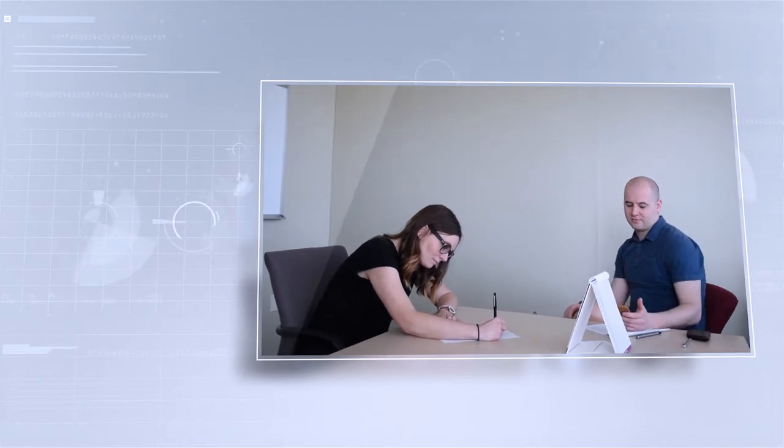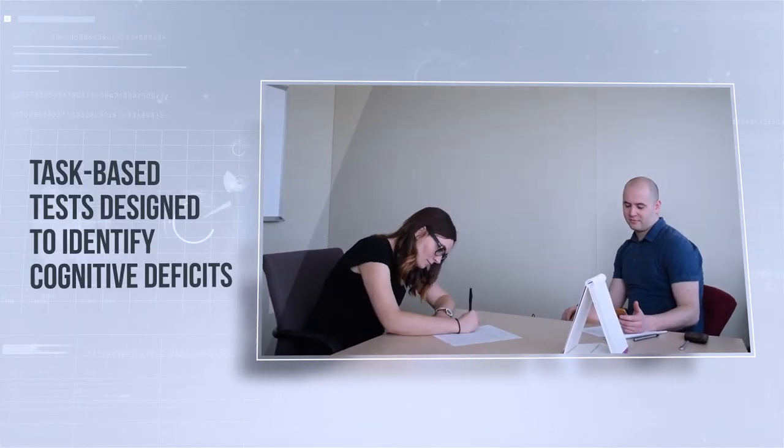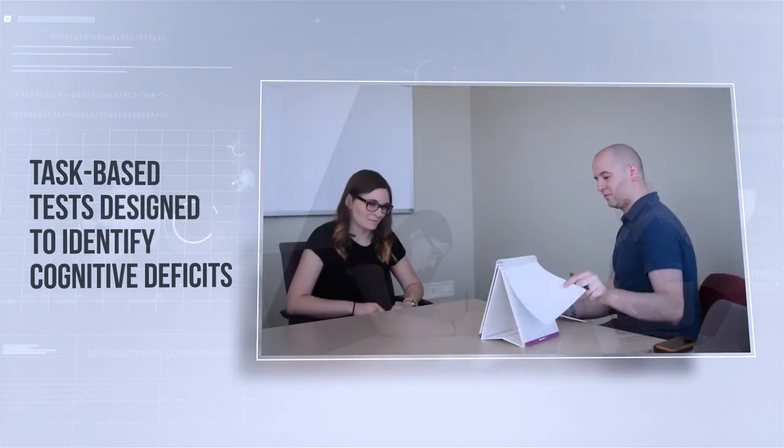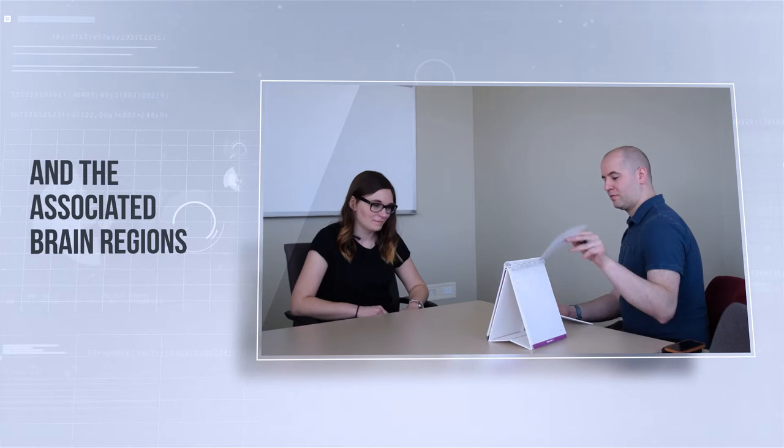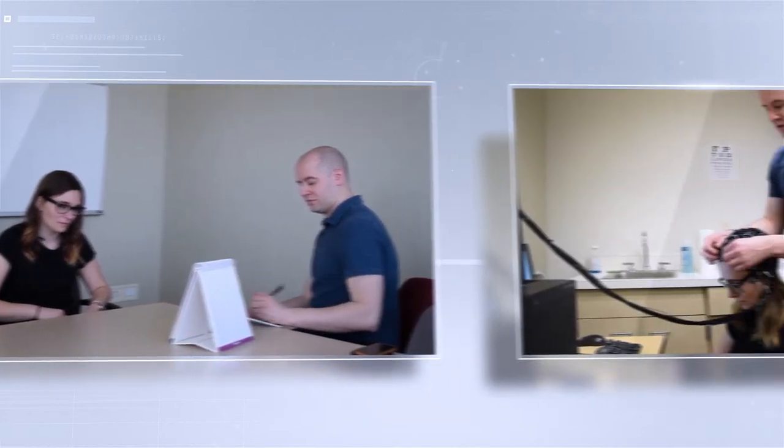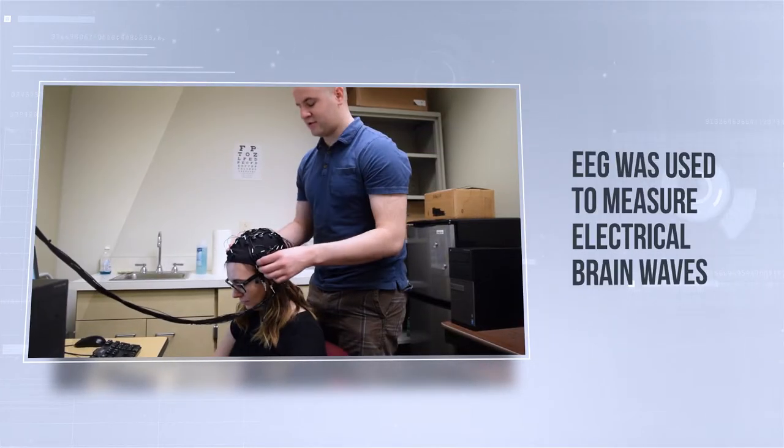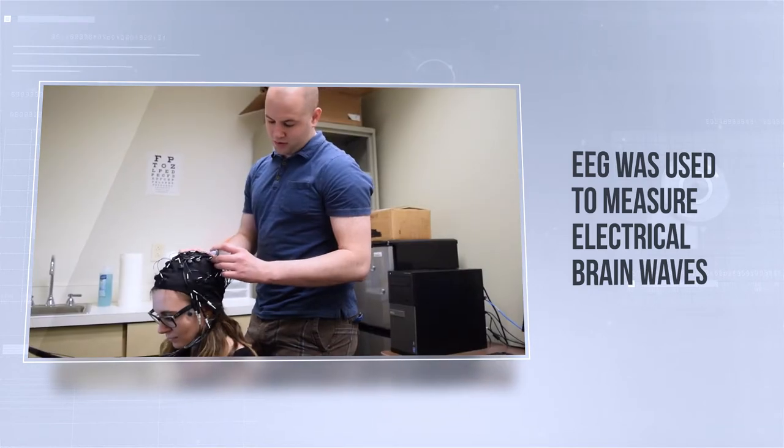First, all subjects were given a battery of task-based tests designed to identify specific cognitive deficits and the associated brain regions. Next, EEG was used to measure electrical brain waves in response to different types of stimuli.